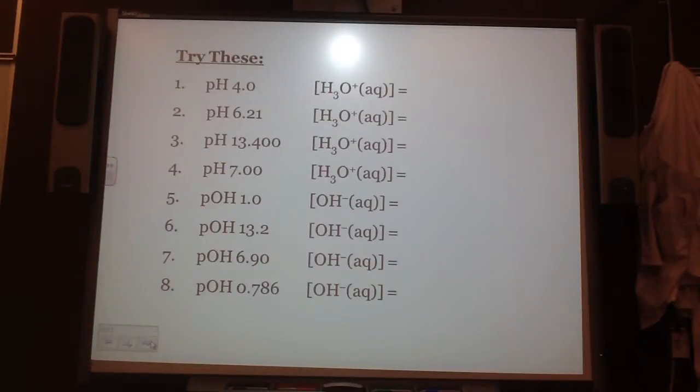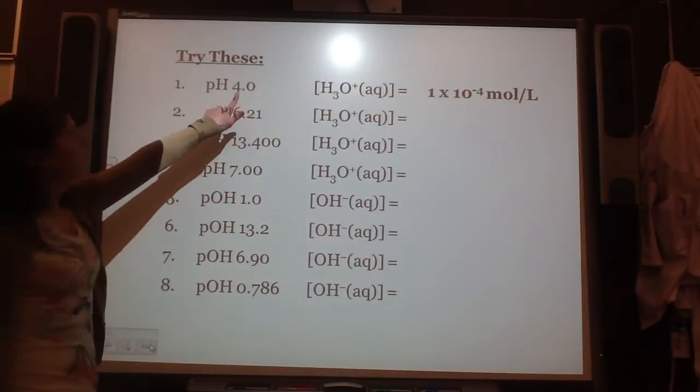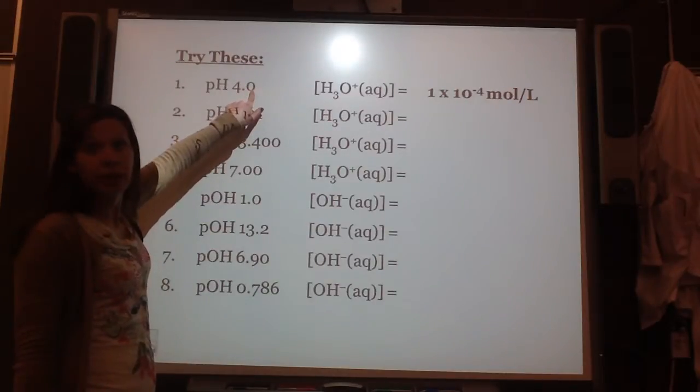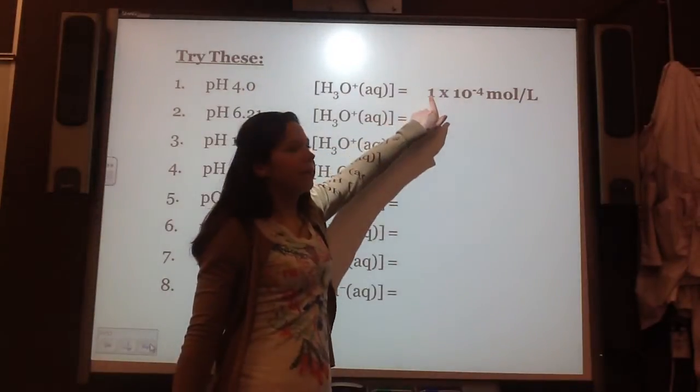So let's try one together. So say we're given the pH of something, so now go 10 to the power of negative 4 in your calculator. Now notice we're flipping from pH to hydronium ion. So you look at it as, for pH, you look at the significant digits behind the decimal place. There's only one significant digit. So then there's only one significant digit in this answer.